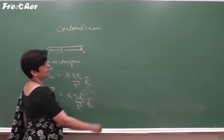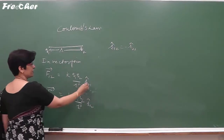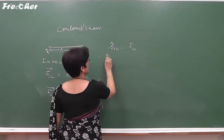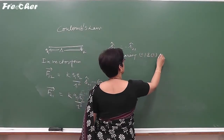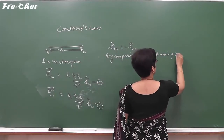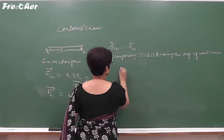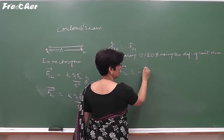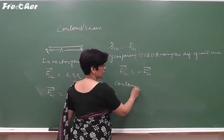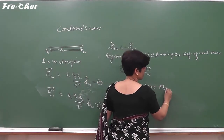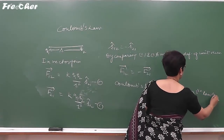From the definition of a unit vector, R̂₁₂ equals minus of R̂₂₁. Comparing the two equations and using this definition, we can conclude that F₁₂ equals minus of F₂₁. This means Coulomb's law obeys Newton's third law of motion.